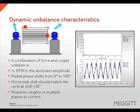Dynamic unbalance is a combination of force unbalance and couple unbalance. The dominant vibration amplitudes will occur at 1 times rotational speed. Radial phase readings will be unsteady from 0 to 180 degrees, and the horizontal phase shift should match the vertical phase shift. Dynamic unbalance will require a multi-plane balance weight placement to correct.